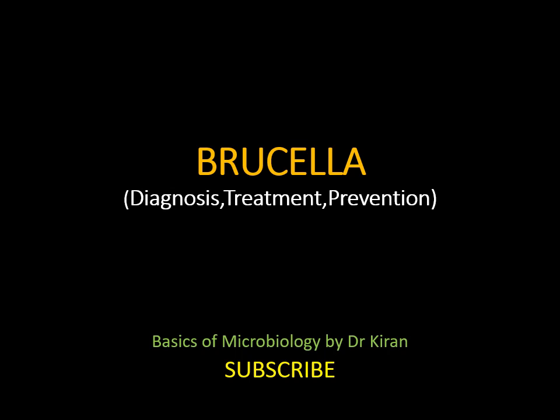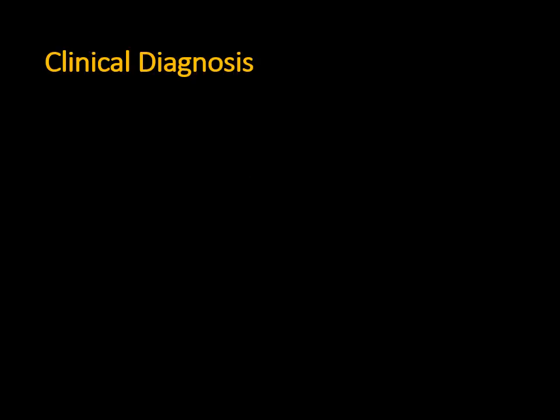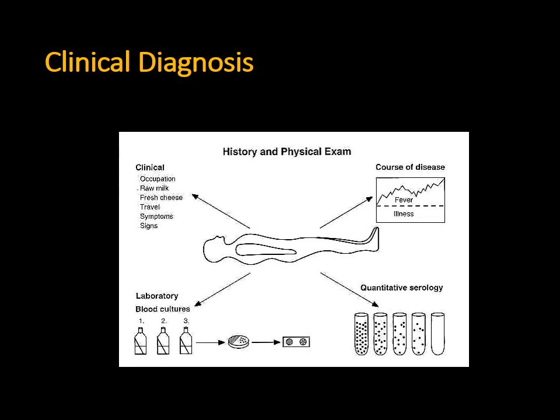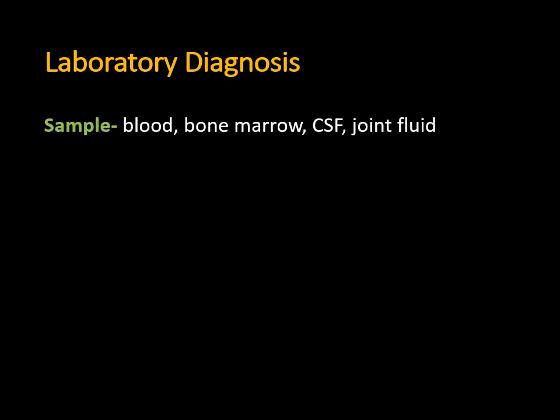Now we come to how to diagnose a case of brucellosis. First comes the clinical diagnosis, then the laboratory diagnosis. When the patient comes to OPD, there will be a history of occupation relating to animals, which will link to brucellosis. There may also be a history of consumption of raw milk, fresh cheese, or some travel history. Then comes laboratory diagnosis — the samples we need are blood, bone marrow, CSF, and joint fluid, depending on the patient's presentation.